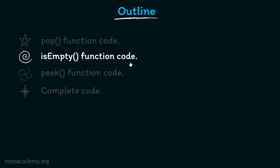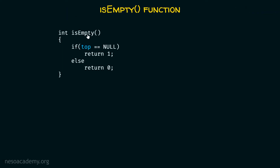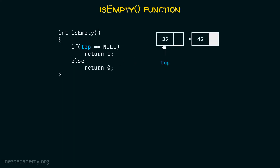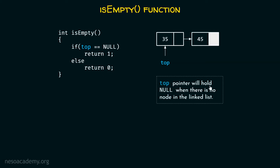Now let's move to the isEmpty function code. This is how isEmpty function looks like — it is very simple. We check: if top is equal to null, then return one, which means the stack is empty. Else return zero, which means stack is not empty. Let us suppose this is the initial state of the linked list and top pointer is pointing to a node — which means top is not null and our stack is not empty, so this function will return zero. Top pointer will hold null when there is no node in the linked list.